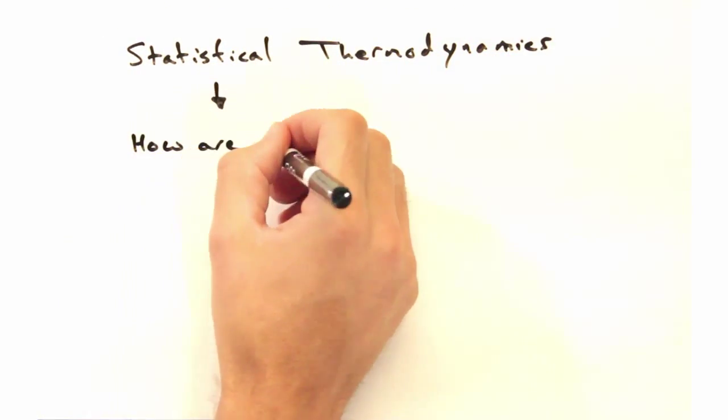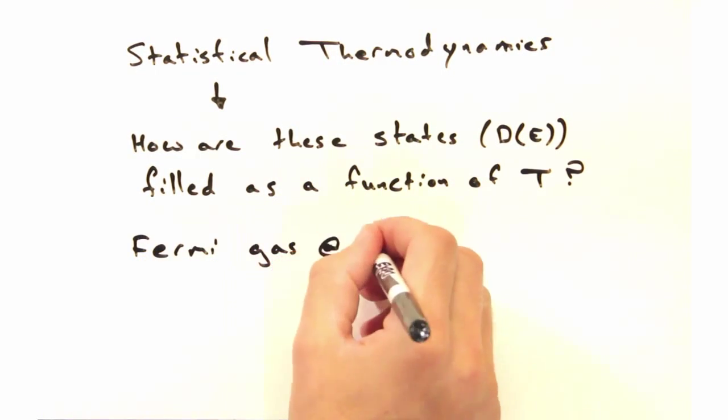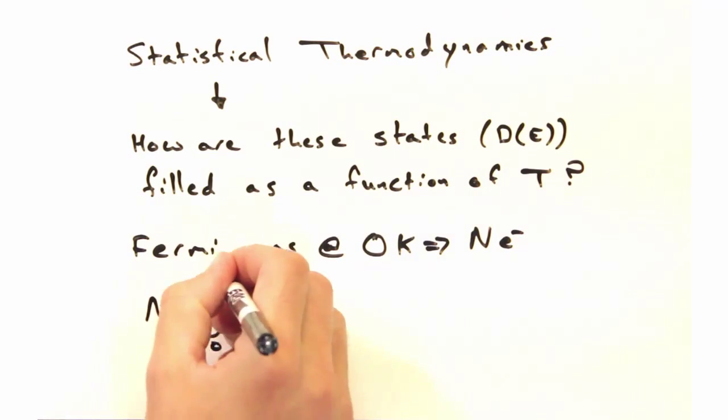So now that we have our density of states, we should look to statistics to see how these states are filled as a function of temperature. To think about that, imagine we have a Fermi gas at 0 kelvin.